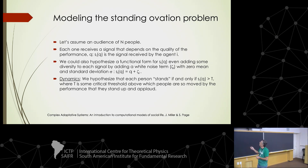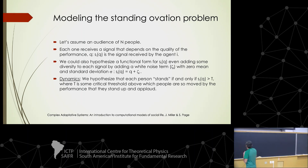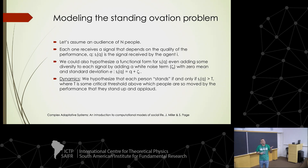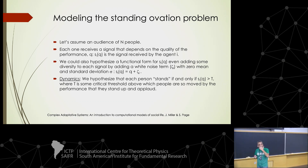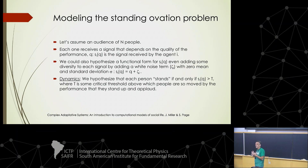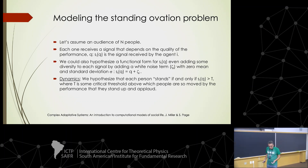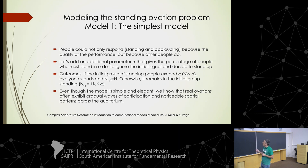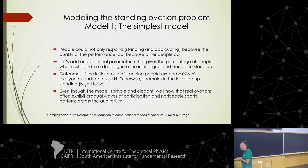This behavior could respond to different strategies — pictures of how they should behave in a group or how they should react to the performance. If we want to model this problem, let's start from the basics. Assume we have an audience of N people, N agents; each one receives a signal that depends on the quality of the performance. We can hypothesize a functional form for that signal — I(q), where q is some measure of the quality of the performance.